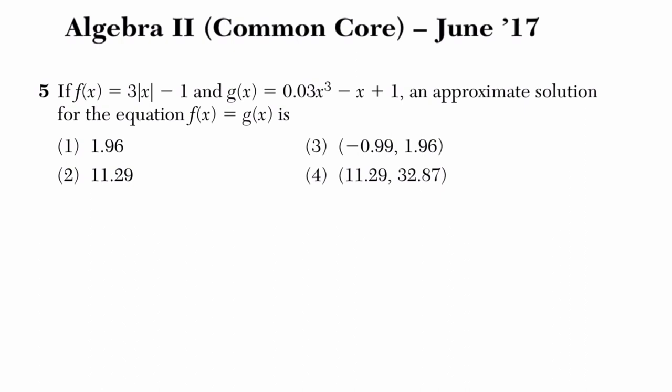All right, so this seems to be a popular question on the Regents and it's a frustration of mine, but when they say an approximate solution for the equation f of x equals g of x, it's not wrong that they're doing this, it's just that it's confusing.